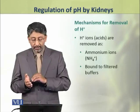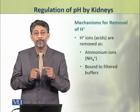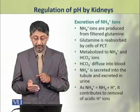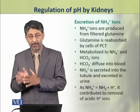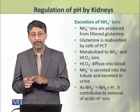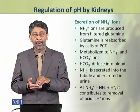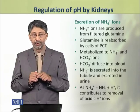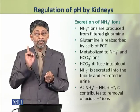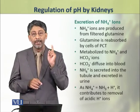Hydrogen ions are removed as ammonium ions and as bound to some filtered buffers. The ammonium ions are produced from the filtered glutamine. Glutamine is reabsorbed by the cells of the proximal convoluted tubule. In these cells, glutamine is metabolized to ammonium ions and bicarbonate ions. Bicarbonate ions are diffused into the blood, but the ammonium ions are secreted into the tubule and excreted in the urine. Because one ammonium ion is equivalent to one ammonia molecule and one hydrogen ion, it contributes to the removal of acidic hydrogen ions.